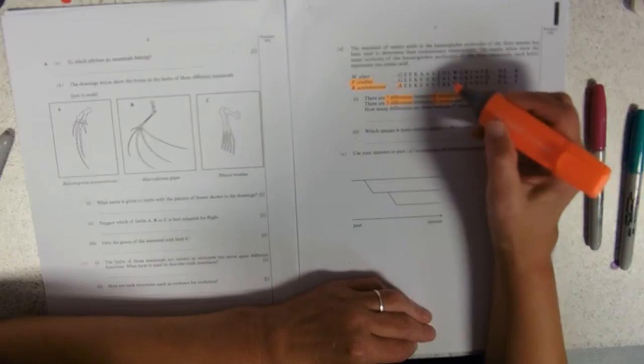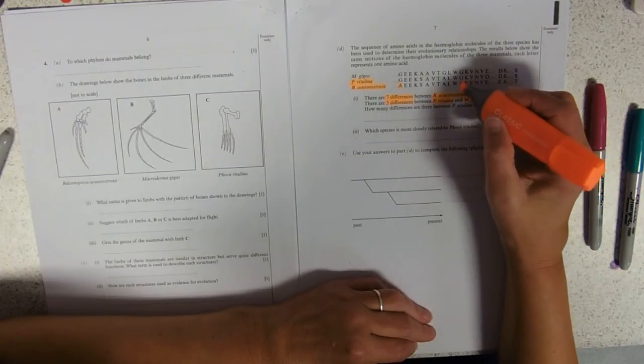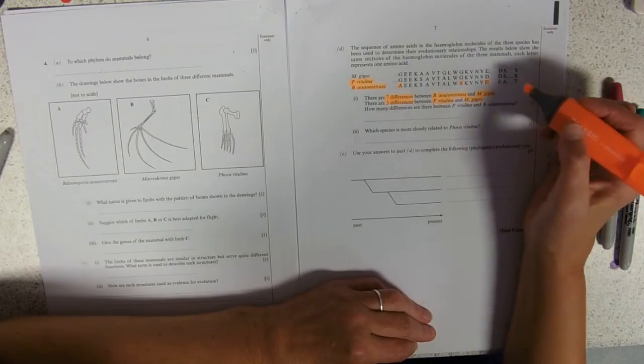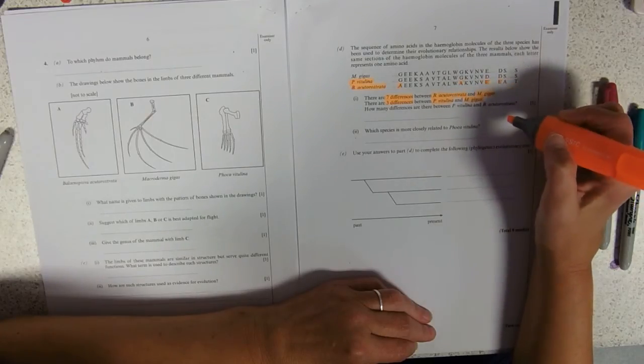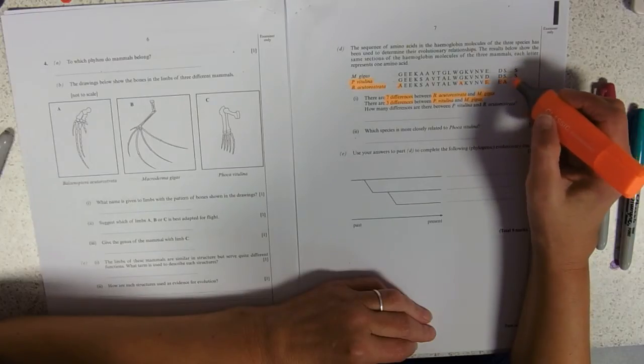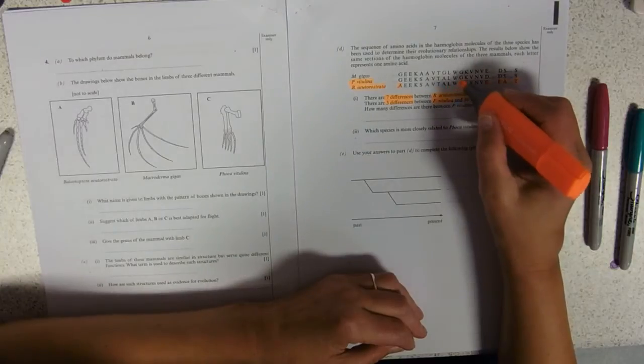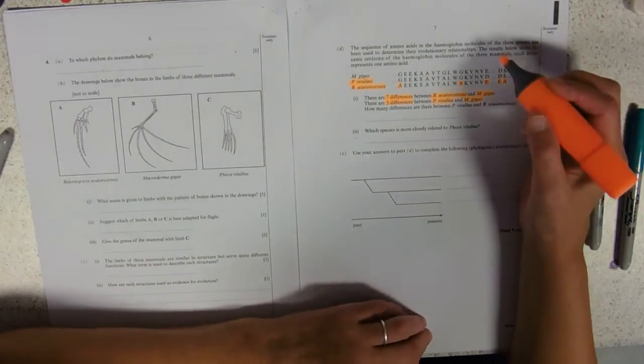So, highlighter is always useful. One, two, three, four, five, six. Six differences. And so, pretty much,